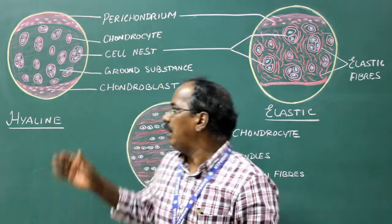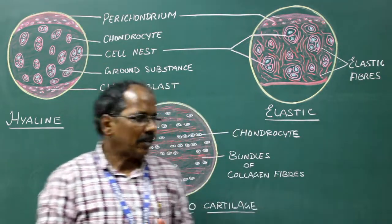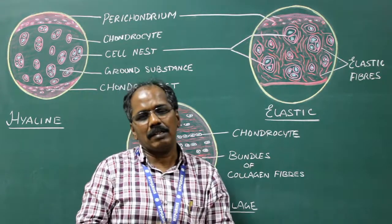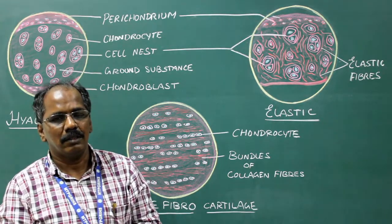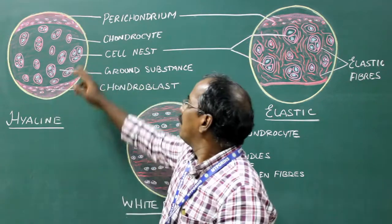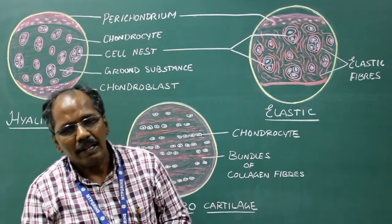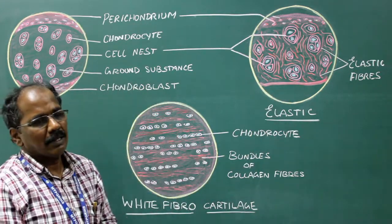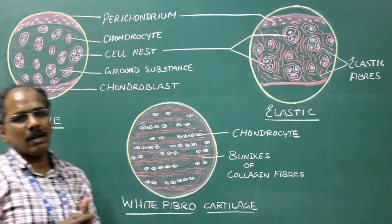The hyaline cartilage undergoes calcification, whereas the white fibrocartilage and elastic cartilage does not undergo calcification. Presence of perichondrium in hyaline cartilage and elastic cartilage. The perichondrium is absent in white fibrocartilage.